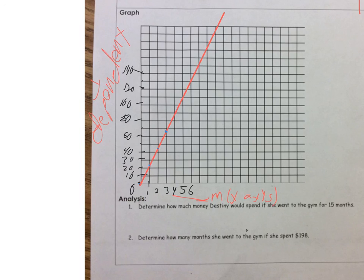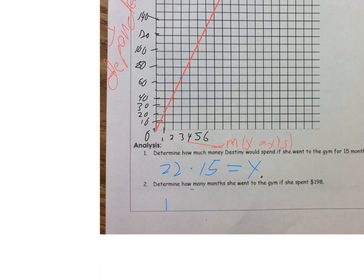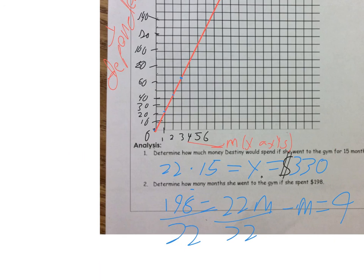So we come down here, determine how much money Destiny would spend if she went to the gym for 15 months. Again, you're just substituting back in. 22 times 15 is going to equal Y. Determine how many months she went to the gym if she spent $198. So this is just working backwards. 198 equals 22M. You'll divide by 22. In this case, you're just going to multiply out. So I'll go ahead and solve those and write down the solutions. So I've solved these two problems. In this case, 198 divided by 22 equals 9. So this means that she went for 9 months. In this case, 22 times 15 would be 330. So this would be dollars. So she spent $330, and this is 9 months that she went to the gym.